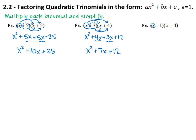Our last one: x times x is x squared, x times 4 is 4x. Negative 1 — we keep that sign with it — negative 1 times x is negative x, and negative 1 times 4 is negative 4. Again we have like terms in the middle. Positive 4 and negative 1 make positive 3x, so we get x squared plus 3x minus 4.